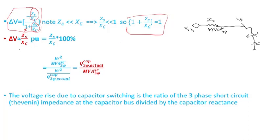We're trying to estimate delta V — the voltage difference between before closing the capacitor bank switch and after the capacitor bank is switched in. This is an estimation because we are making the assumption that ZS is much smaller than XC, so that denominator term approximates to one. Therefore, delta V equals the Thevenin impedance divided by the impedance of the capacitor bank, in per unit — multiply by 100 if you want it in percent.